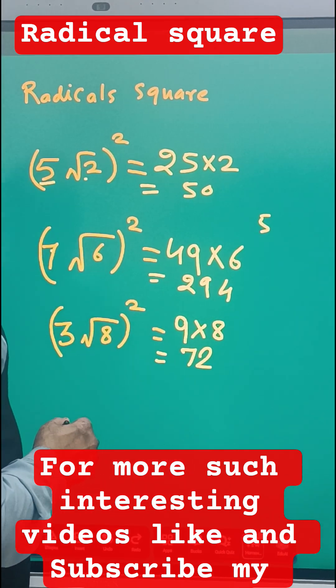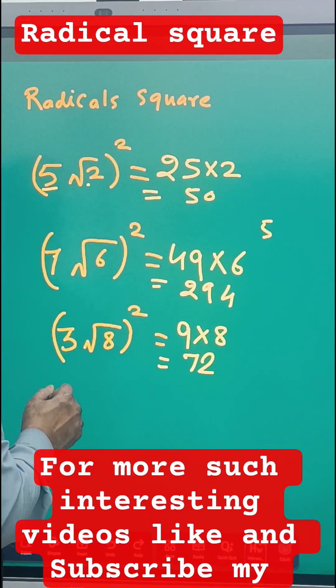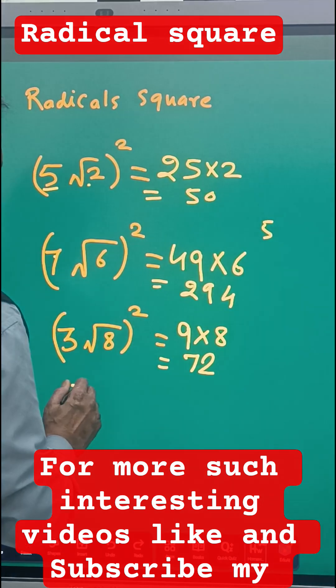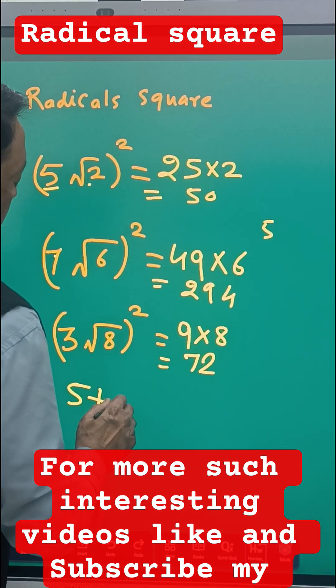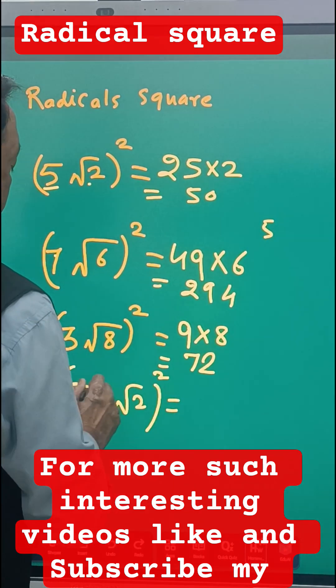Okay, so separate if you do, because there is a multiplication. Same way, if you have a number 5 plus root 2, then this will be not applicable. So then we have to use the formula a plus b the whole square.